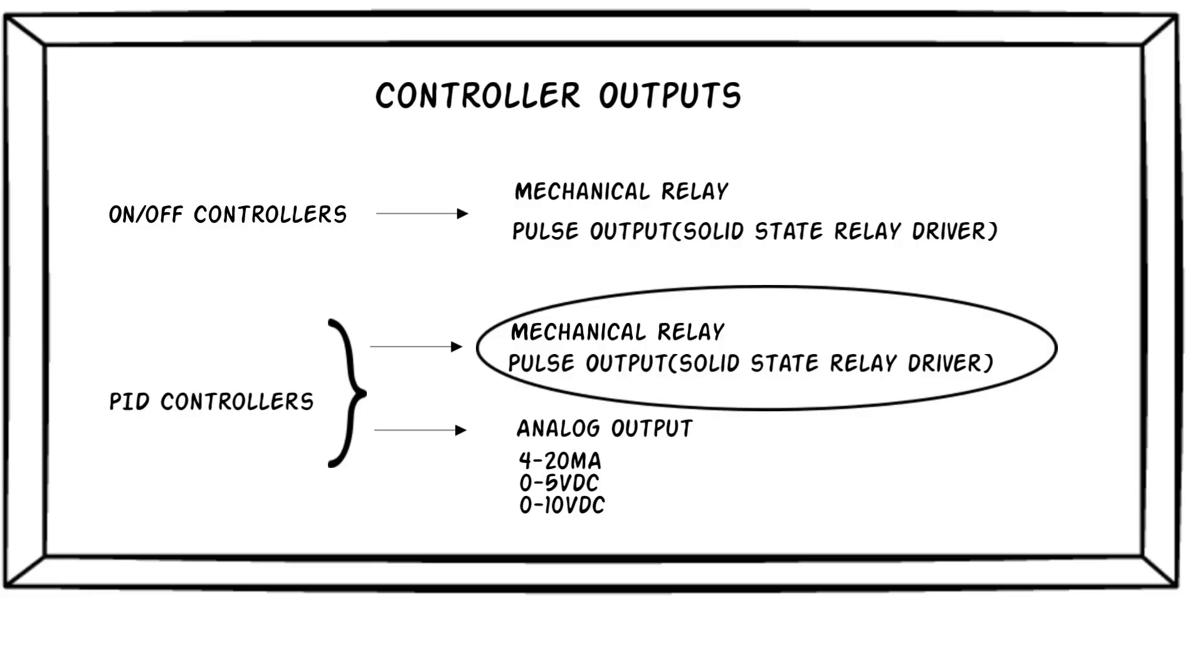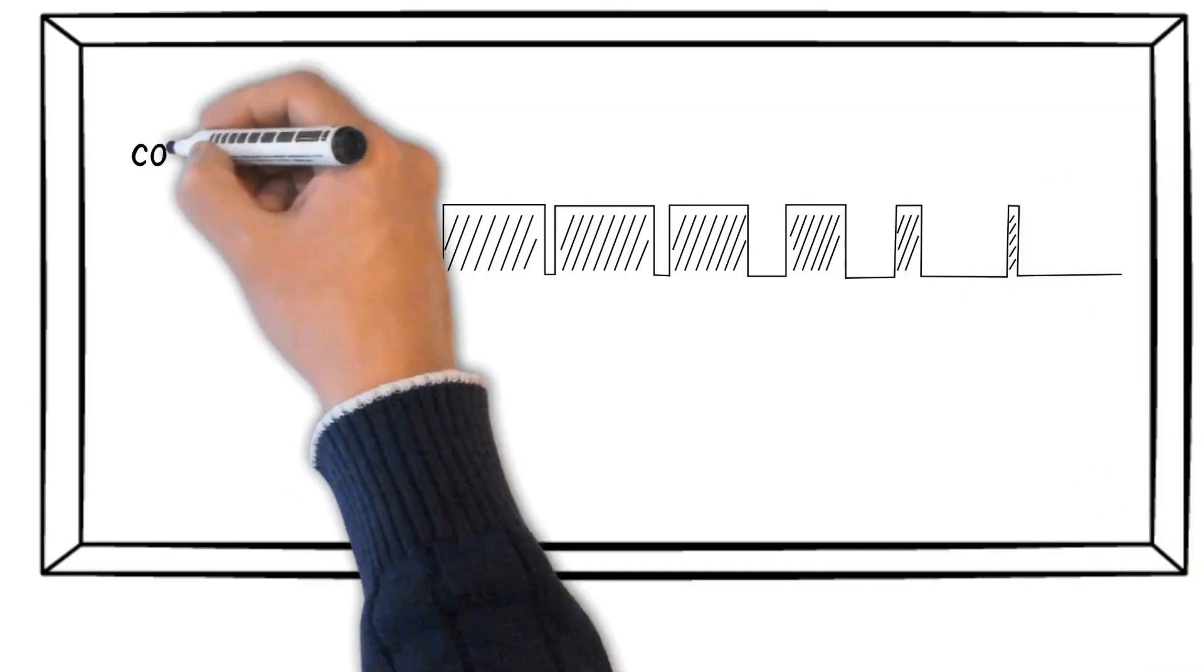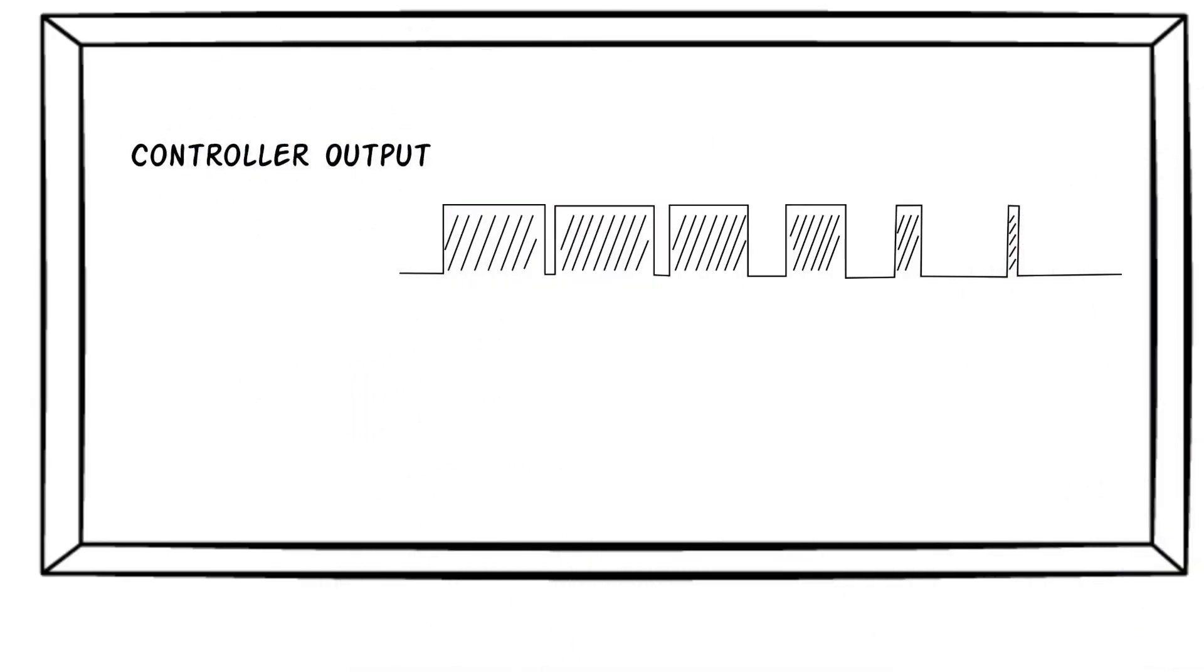As we discussed in the previous slide, with on-off control, the output is on when the temperature is below the setpoint and off when the temperature is above the setpoint. With PID control, rather than simply switching the output from one state to another above or below the setpoint, the output of a PID controller is cycled on and off.